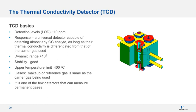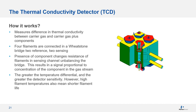How does the thermal conductivity detector work? It works based on the difference in thermal conductivity between the carrier gas and the carrier gas plus components. While only carrier gas is flowing, the filament temperature is in equilibrium, heat loss is equal, and the signal is zero. If analytes elute with the carrier gas, the thermal conductivity in the analysis cell changes, the rate of heat loss of the two filaments becomes unbalanced, and a current must be applied, which is recorded as the detector signal. This means the greater the temperature differential, the greater the detector sensitivity.